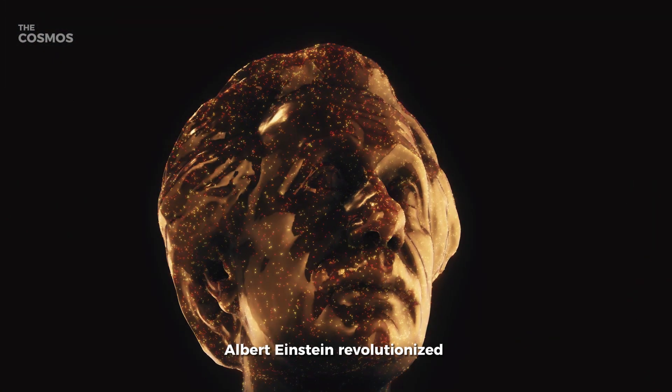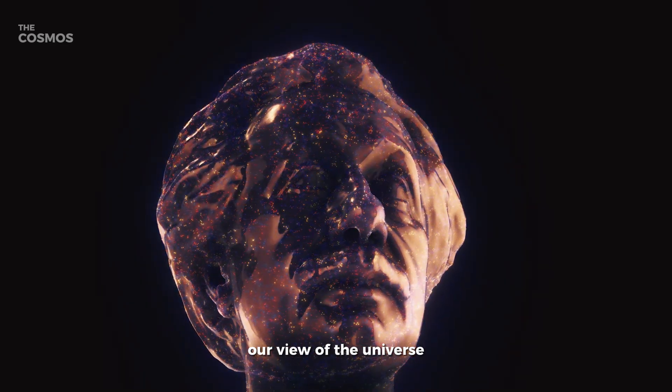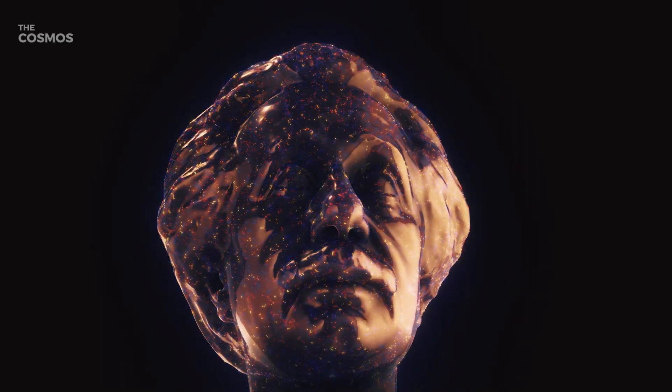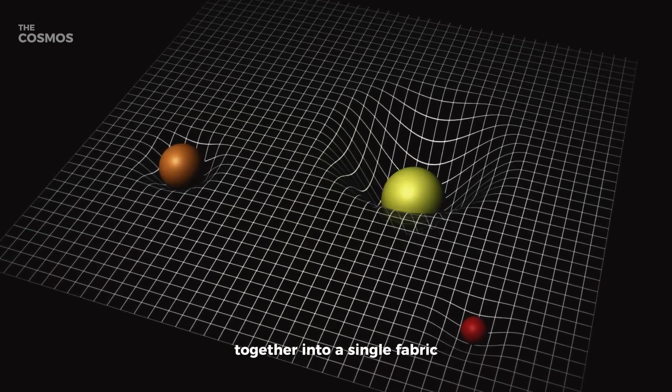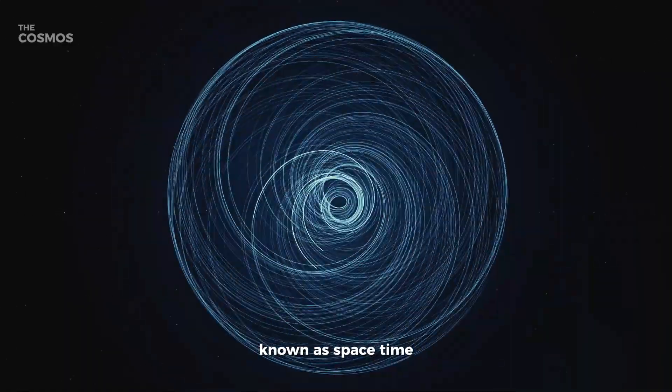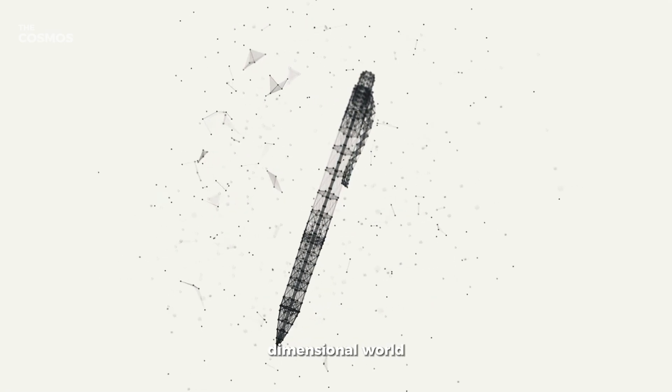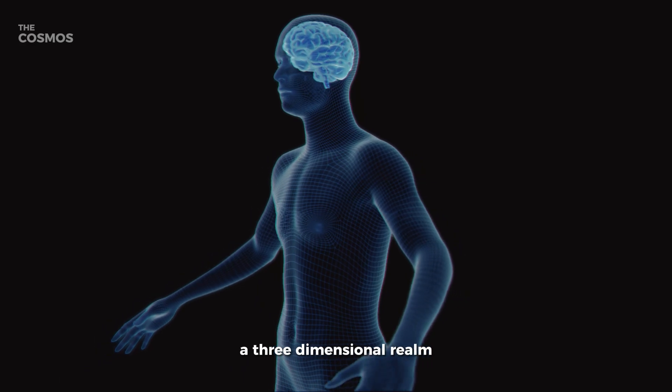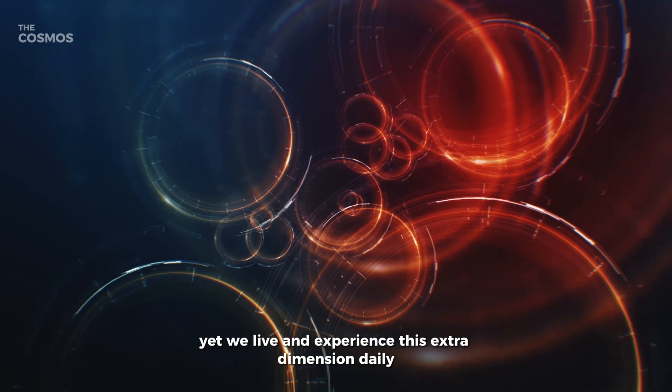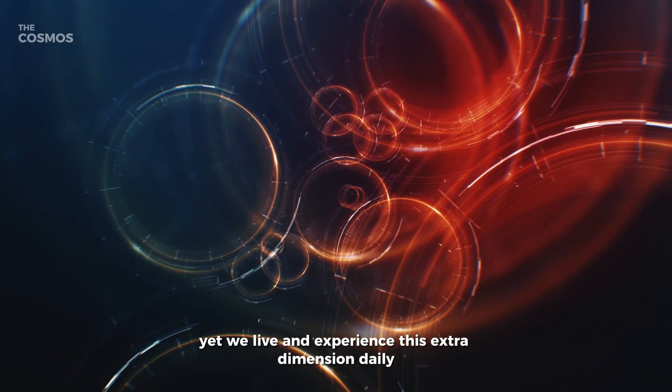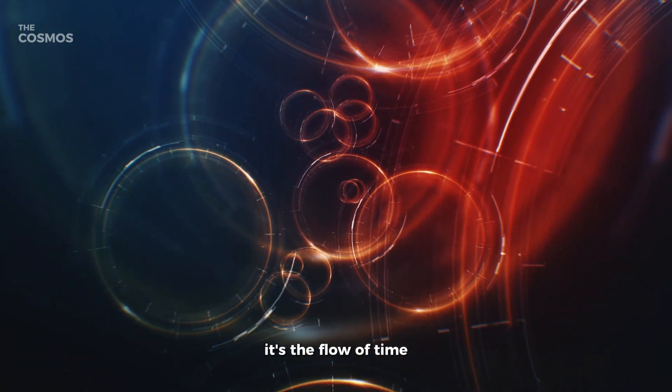Albert Einstein revolutionized our view of the universe with his theory of relativity. He proposed that space and time are not separate entities but are intricately woven together into a single fabric known as spacetime. Imagine trying to add a fourth pen perpendicular to three others in the three-dimensional world—it's impossible. Our minds, evolved in a three-dimensional realm, struggle to conceptualize a fourth spatial dimension. Yet we live and experience this extra dimension daily: it's the flow of time.